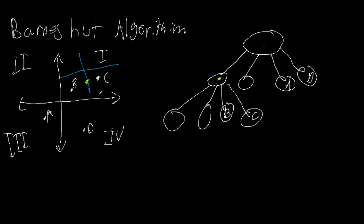The process of determining whether we can treat them as one particle uses this equation: take the distance between point A and the center of mass (called D) and divide by S, which is the length of the current subdivision. If D divided by S is less than some threshold theta, we can count the green particle as the combined center of mass of B and C with their combined mass, and calculate the binding force between A and that combined particle. The force vector applied on that combined particle is then distributed to B and C as well, while also affecting A. This tree structure allows us to reduce the number of calculations needed.